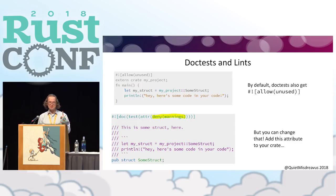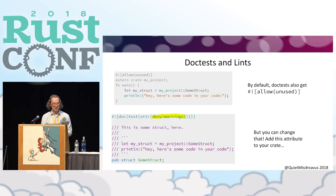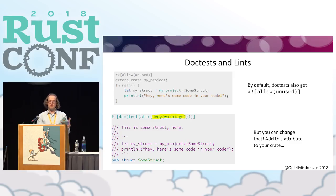There's one last thing RustDoc does. Because doc tests can hit a few style lints that are pretty common, it adds an `allow(unused)` attribute to ignore a handful of lints common in doc tests. For example, if I assigned a variable `my_struct` and don't use it, that's an unused variable lint. But say we don't want that — say we have `deny(warnings)` on our crate and we want to make sure our doc tests are held to the same standard. There's a way to do that with the `doctest` adder attribute.